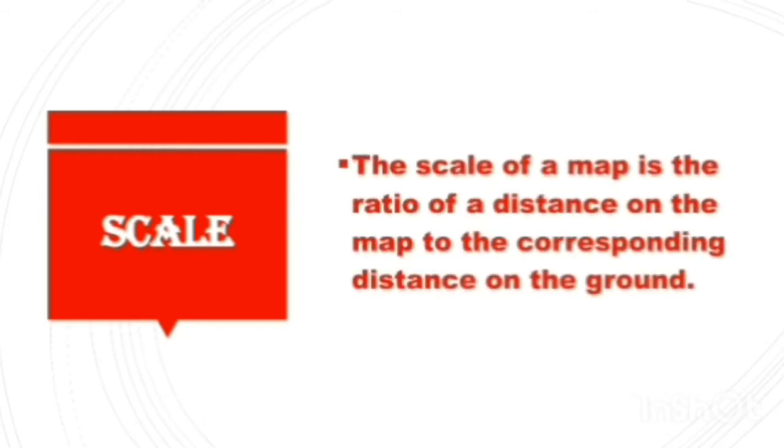Next, scale. The scale of a map is a ratio of a distance on the map to the corresponding distance on the ground. Example: Scale 1 cm is equal to 100 km.